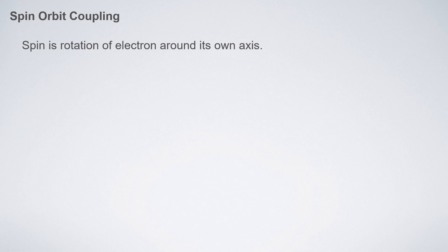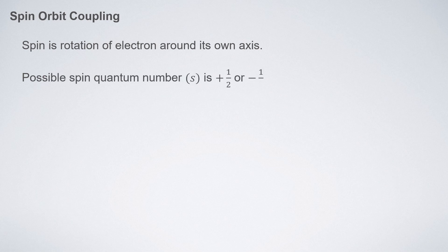Spin is the rotation of an electron around its own axis, and the spin quantum number has both a magnitude, which is 1/2, and a direction, which can be plus or minus. So the spin quantum number of an electron can have two possible values: plus one-half or minus one-half.